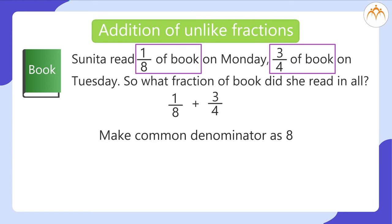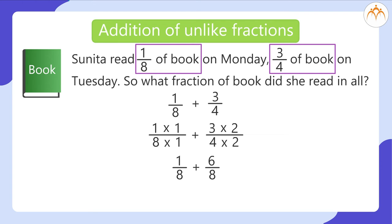Make common denominator as 8. 1 multiplied by 1 by 8 multiplied by 1, plus 3 multiplied by 2 by 4 multiplied by 2. So, 1 by 8 plus 6 by 8, which is equal to 1 plus 6 by 8. So, the answer is 7 by 8. That is, 7 eighths of book was read in all.